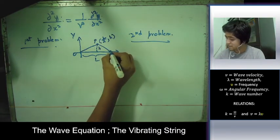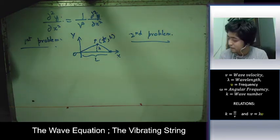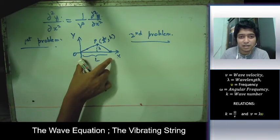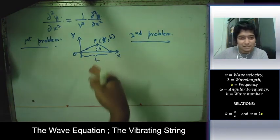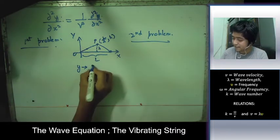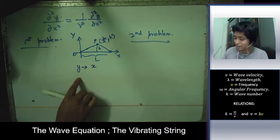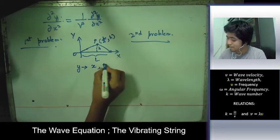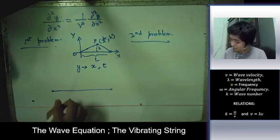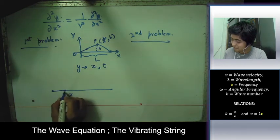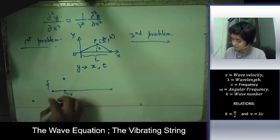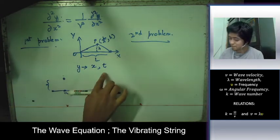Each point of the string has a different y-coordinate and x-coordinate. Once it starts vibrating, the y-coordinate depends on time as well — a specific point moves up and coming down, so its y-coordinate changes with time.